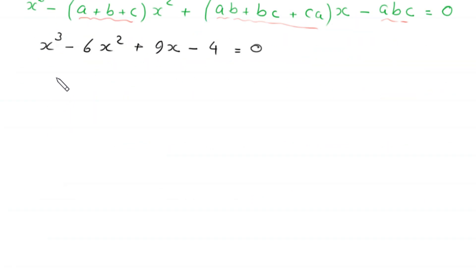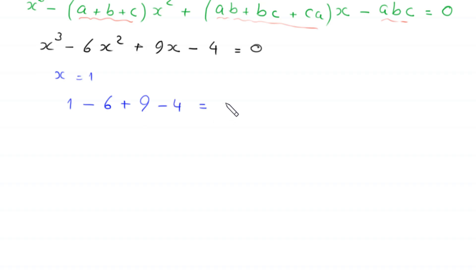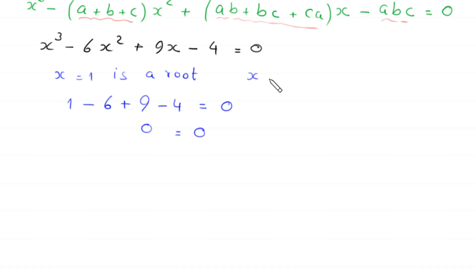Now, putting x equals 1 into the equation: 1 minus 6 plus 9 minus 4 equals 0, which gives 1 minus 6 plus 9 minus 4 = 0. This is satisfied, so x equals 1 is a root, and therefore x minus 1 is a factor. We find the other factor using synthetic division.